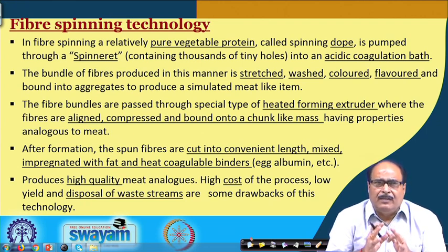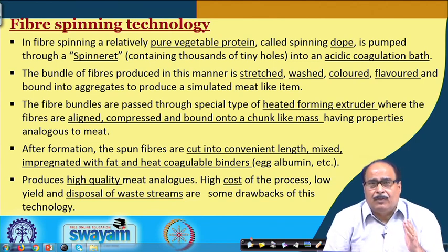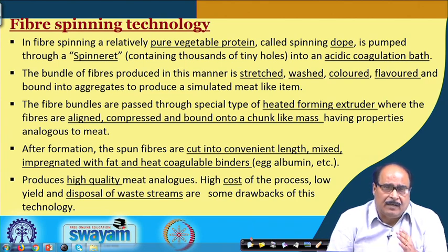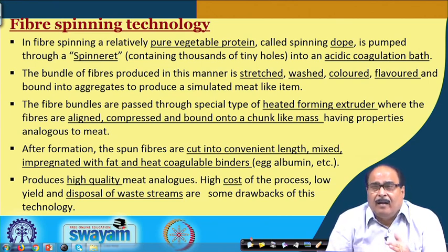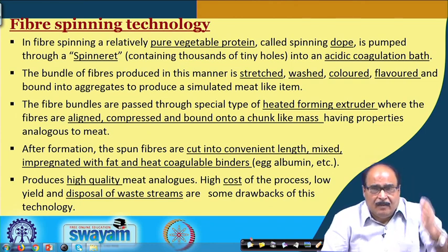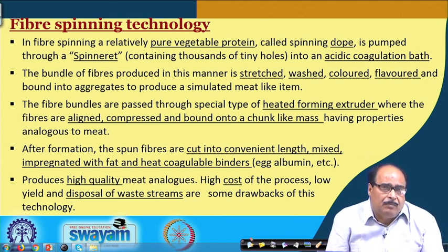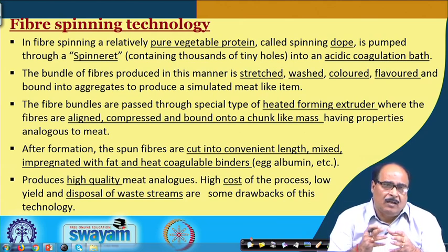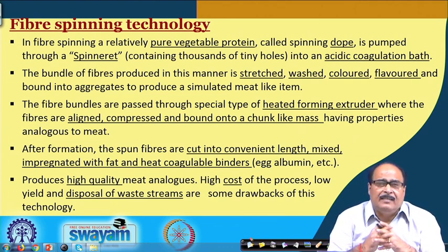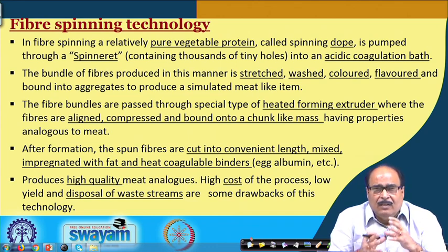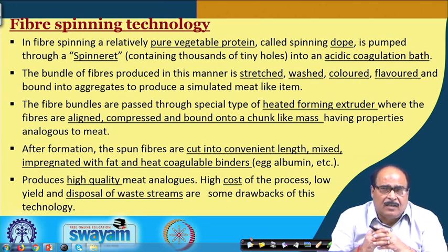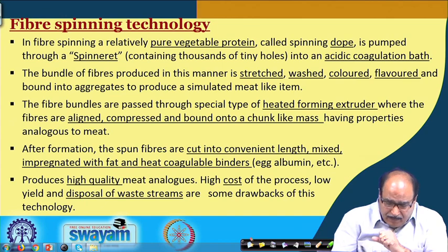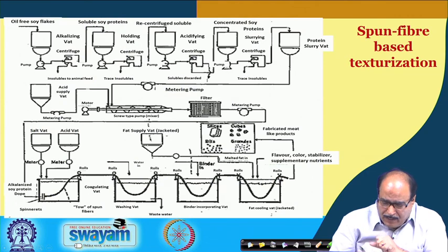After formation, the spun fibers are cut into convenient lengths, mixed, and impregnated with fat and other heat-coagulable binders like egg albumin. This spin fiber technology produces a comparatively high quality meat analog because pure vegetable protein is used as raw material. However, it is a comparatively costly process due to the cost of protein extraction and purification, low yield, and disposal of waste streams such as the acid coagulation bath.